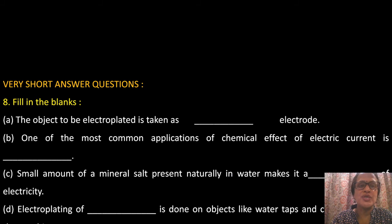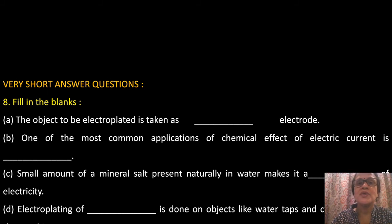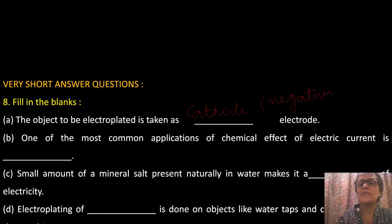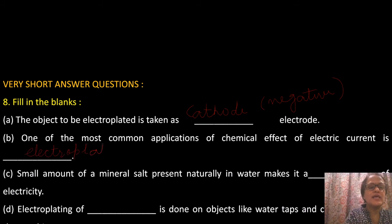Very short questions: Question A — the object to be electroplated is taken as the negative electrode, which is called the cathode. Question B — one of the most common applications of the chemical effect of electric current is electroplating, which deposits a layer of metal on various objects for different purposes.